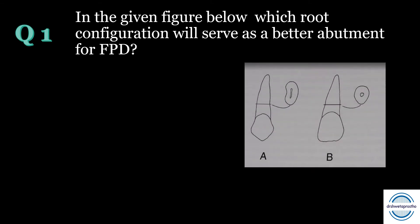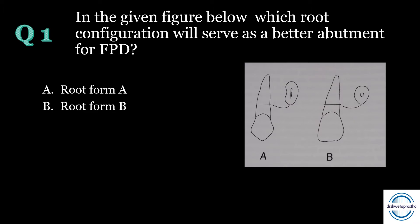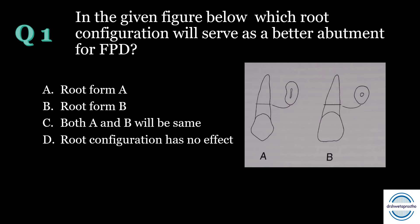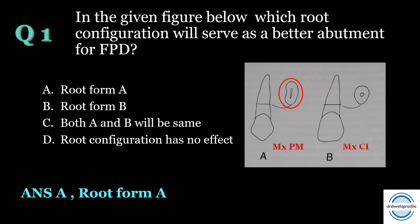Question number one: In the given figure, which root configuration will serve as a better abutment for FPD? Root form A, root form B, both A and B the same, or root configuration has no effect? The answer is A — root form A. Root form A has a greater facial-lingual dimension, making it a superior abutment compared to B, which is circular in cross-section. Root form A is present in maxillary premolars, while B is found in the maxillary central incisor.